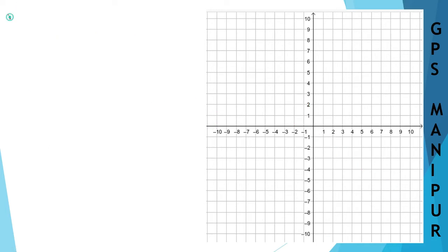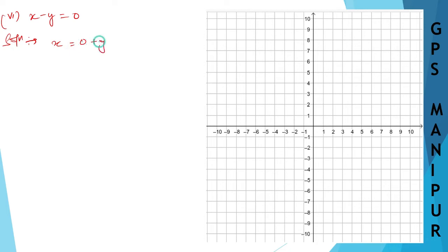Let us do the next one, that is row number 6. We have x minus y equal to 0. Solution: x minus y equal to 0, so y comes to this side: 0 plus y, which gives x is equal to y.